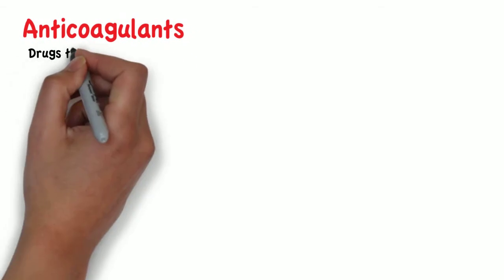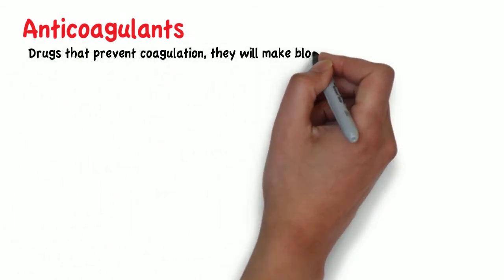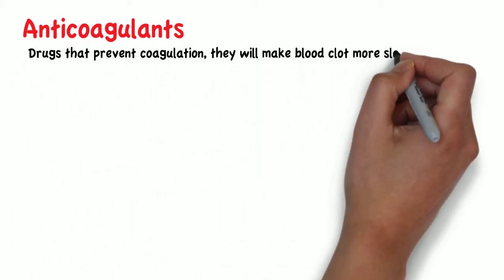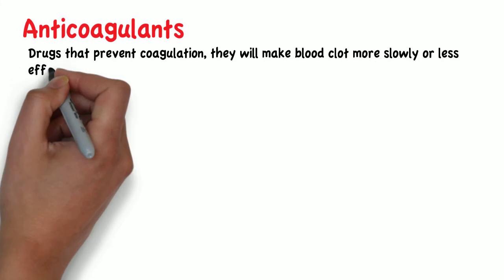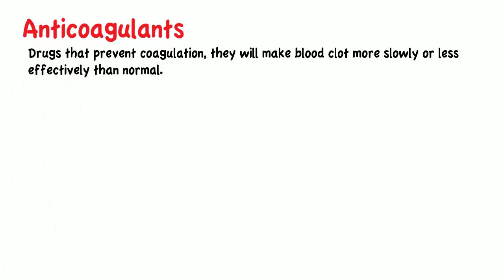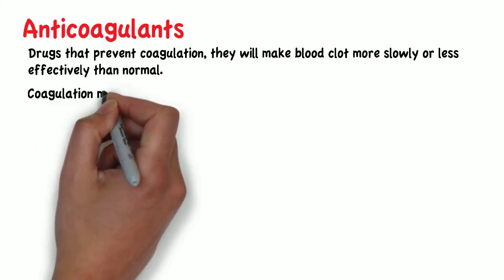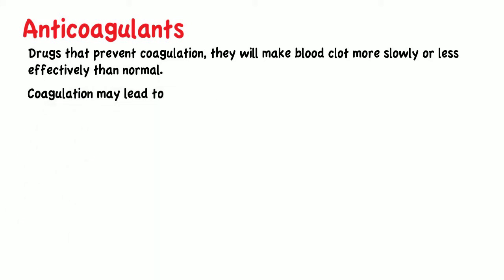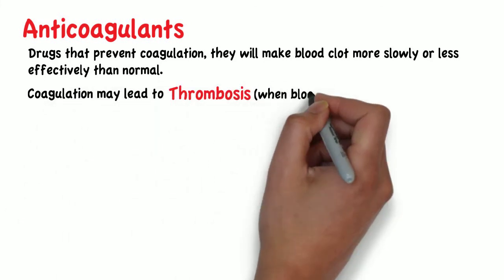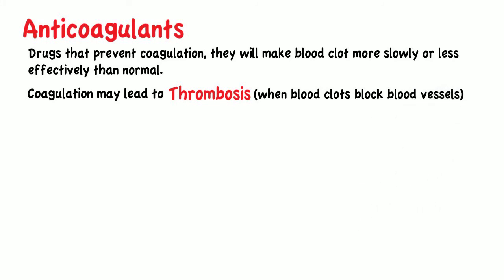Anticoagulants are drugs that prevent coagulation. They will make the blood clot more slowly or less effectively than normal. Despite being an important physiological process, coagulation may lead to thrombosis, which is when a blood clot blocks your blood vessels.